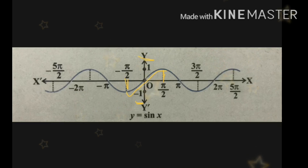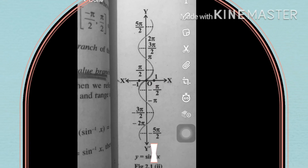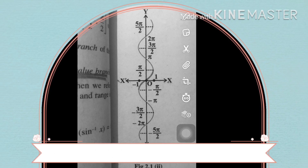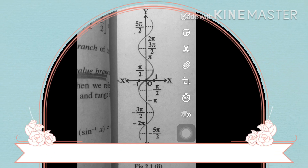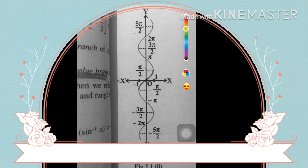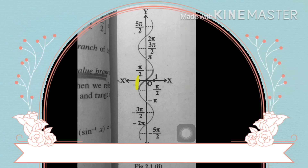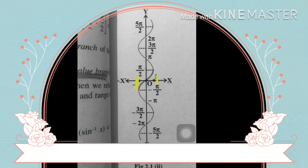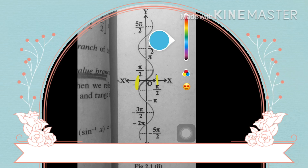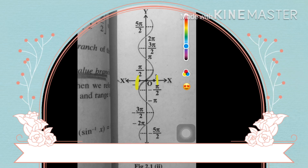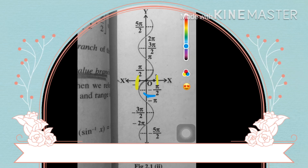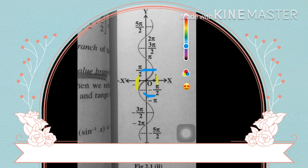So this is how we find the domain and range of sin x. Now in order to find the domain and range of sin inverse x, the domain of sin x becomes the range or the principal value branch of sin inverse x, and the range of sin x becomes the domain of sin inverse x. So here the domain is from minus 1 to 1 and the principal value branch is from minus pi by 2 to pi by 2.